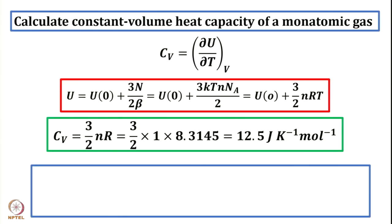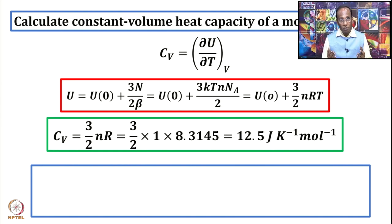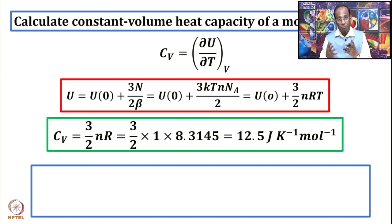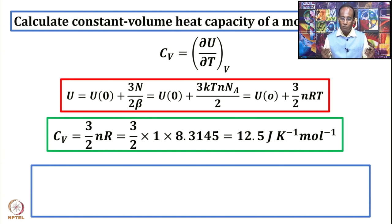Today we will use the derived equations to further discuss their applications. Let us take up the first example. In one of the previous lectures we talked about heat capacity. Heat capacity is a very important thermodynamic quantity because it connects a thermodynamic quantity at one temperature to the same quantity at another temperature — it is a connector for thermodynamic quantities at different temperatures. Its literal definition is the amount of heat required to change the temperature of a system by 1 Kelvin.